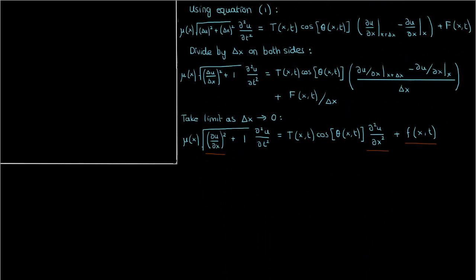Now comes the part where we perform some approximations. Let's assume that the string undergoes very small deviations, or in other words, the amplitude of vibrations is very small. In that case, the angular deviation of the string relative to the horizontal will be small as well.